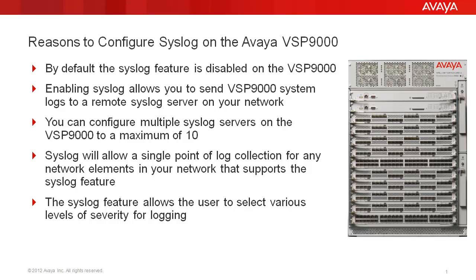By default, the syslog feature is disabled on the VSP9000. Enabling syslog allows you to send VSP9000 system logs to a remote syslog server on your network. You can configure multiple syslog servers on the VSP9000 to a maximum of 10. Syslog will allow a single point of log collection for any network elements in your network that support the syslog feature. The syslog feature also allows the user to select various levels of severity for logging.